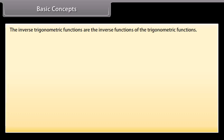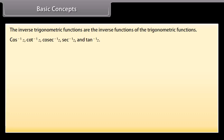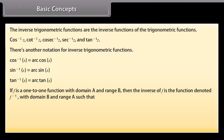The inverse trigonometric functions are the inverse functions of the trigonometric functions. Another notation for inverse trigonometric functions is: cos⁻¹ x = arc cos x, sin⁻¹ x = arc sin x, tan⁻¹ x = arc tan x. Recall that if f is a one-to-one function with domain A and range B, then the inverse of f is the function denoted f⁻¹ with domain B and range A.